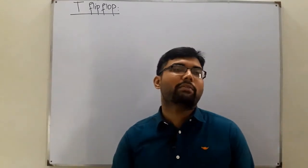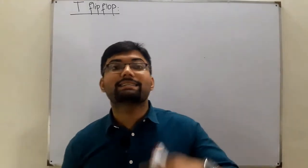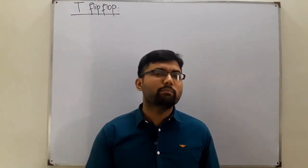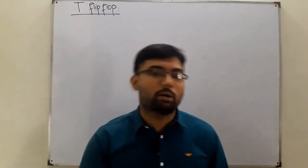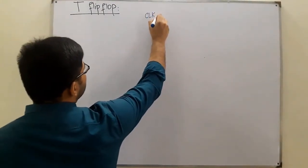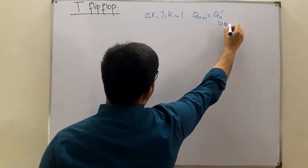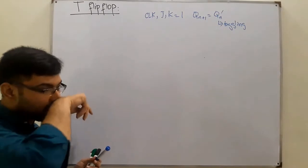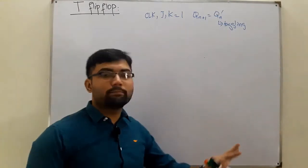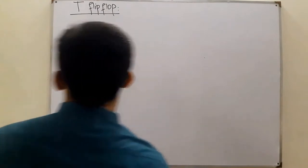I didn't talk about the truth table, the characteristic table, and the excitation table of the master-slave JK flip-flop. Those are the same as the normal JK flip-flop. The change we had was between the toggling and the race-around condition. For that, Q(n+1) is equal to Q(n) complement. The major difference cannot be shown in the truth table — they are both the same. When clock, J, and K are all one, Q(n+1) equals Q(n) complement and they will be toggling, whereas in the simple JK we had the race-around condition. The characteristic table and excitation table are also the same.